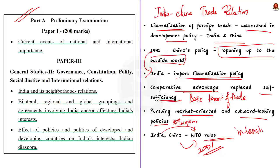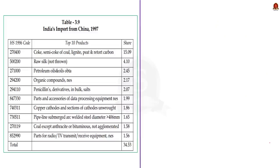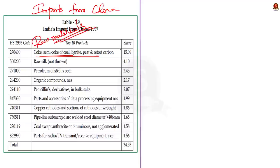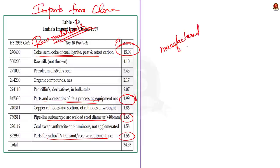Let us now move on to the important imports and export elements between the two countries. Looking at imports from China, from this table we can see that the share of raw materials like coke, semi-coking coal, lignite, peat, retort carbon, and raw silk is dominant when compared to manufacturing products with more advanced technology — such as parts and accessories of data processing equipment, and parts of radio or TV transmit devices.